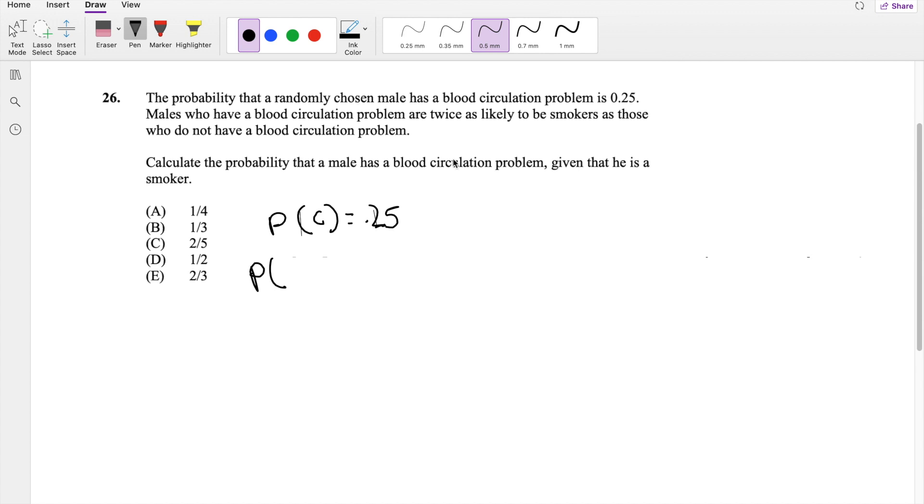So this is essentially saying, the probability that they're a smoker, given they have circulation problems, is twice as likely as the probability that they're a smoker, given they do not have circulation problems. Well, that's a mouthful.